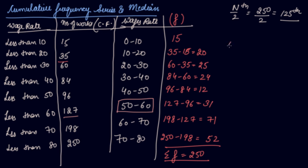So your lower limit is 50, plus N divided by 2, 125, minus cumulative frequency of the preceding class, that is 96, divided by frequency of the median class, 31, into your I, that is class interval, is 10.